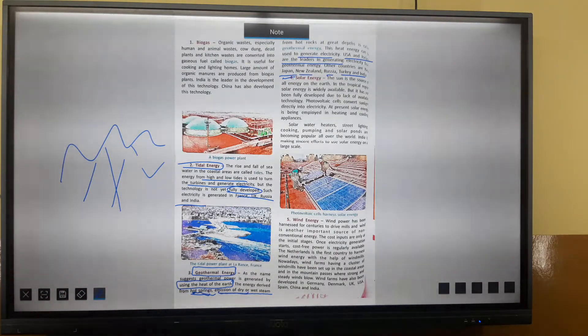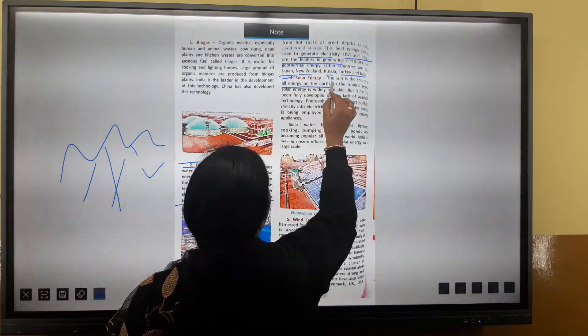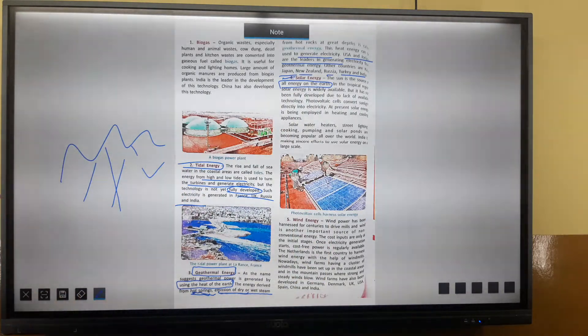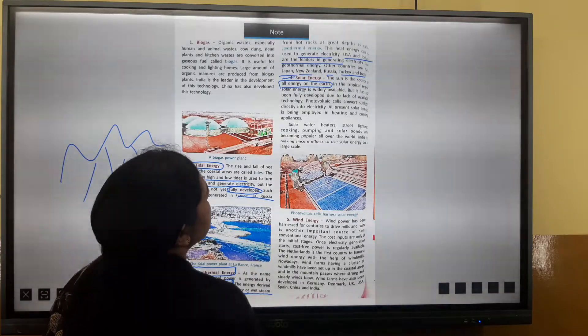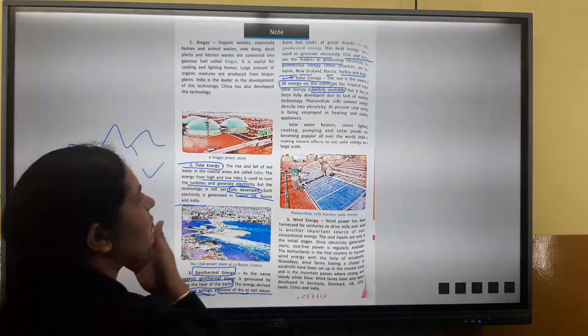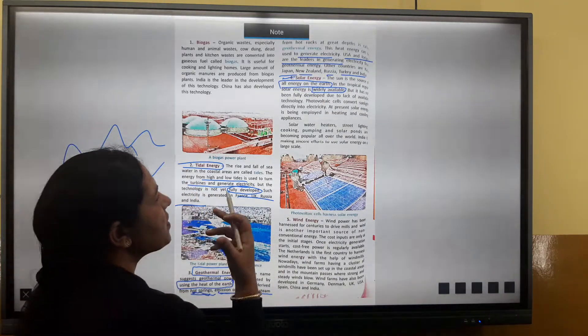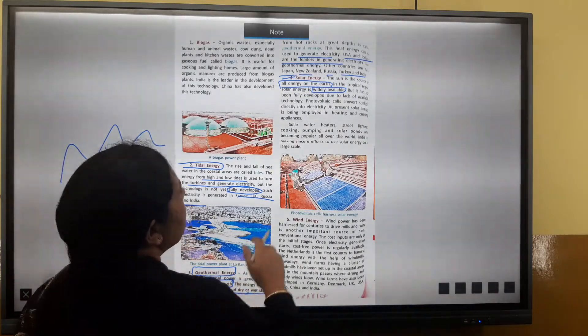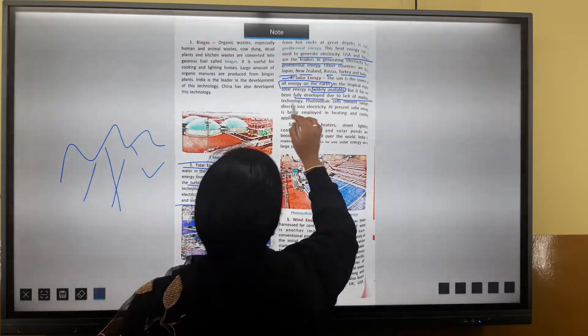The sun is the source of all energy on earth. In tropical regions, solar energy is widely available because there is more warmth. It has not been fully developed due to lack of available technology.